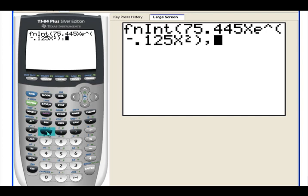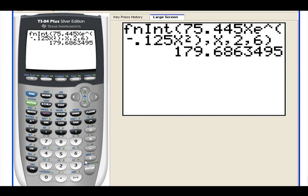Then we need a comma after the function and then hit the x variable key. To us it's obvious that x is the variable, but we still have to tell the calculator. Followed by another comma, lower limit, comma, upper limit, close parentheses, and hit enter. There's our answer.